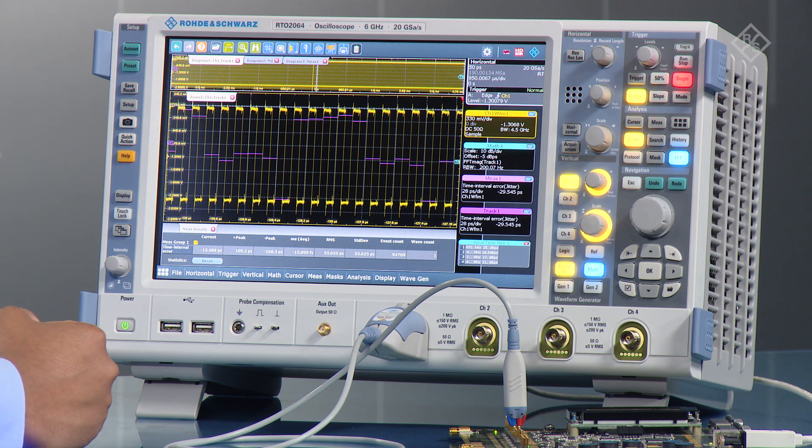What we've then done is doing a measurement on the TIE, so time interval error, and you can see the statistics down at the bottom there for that particular signal.